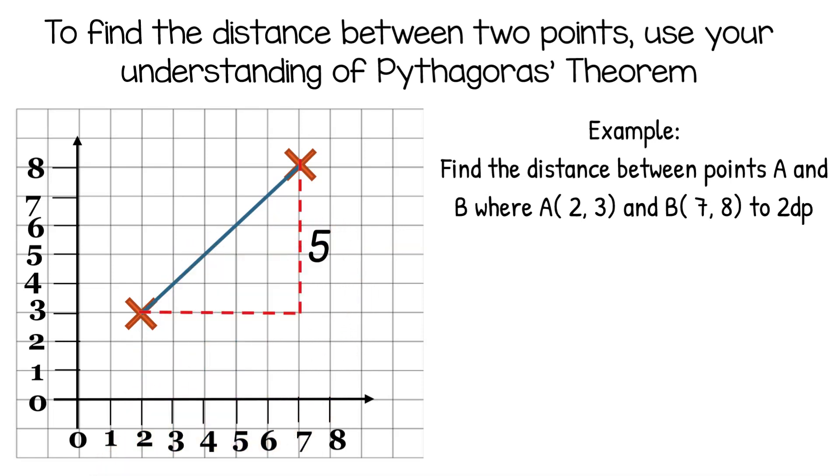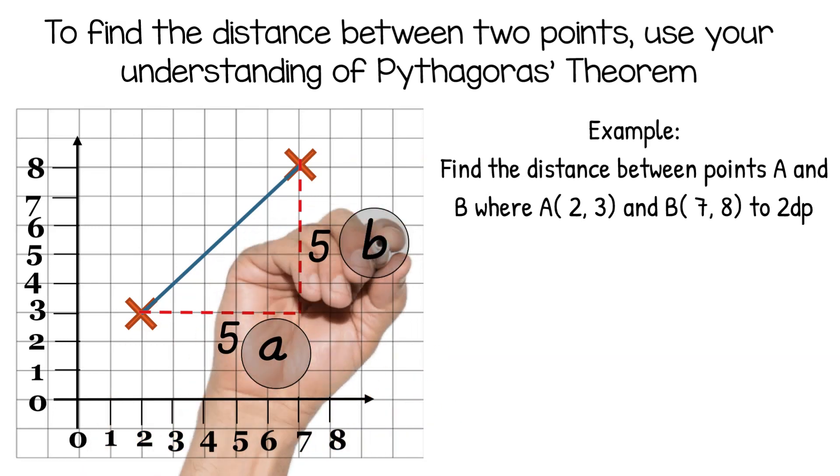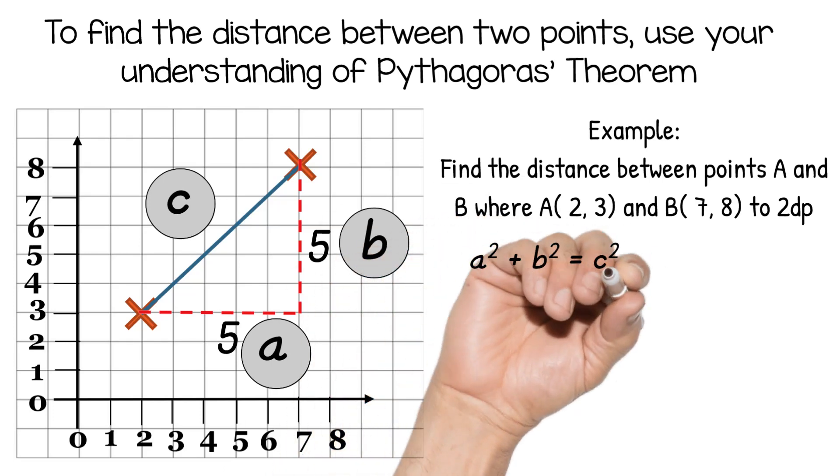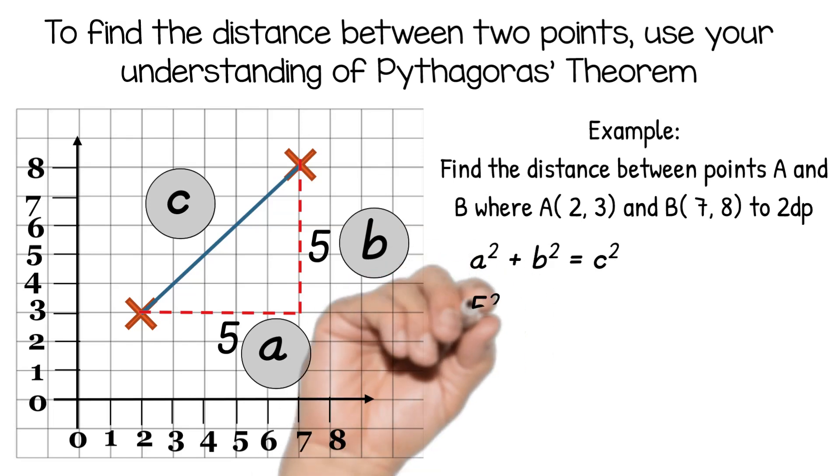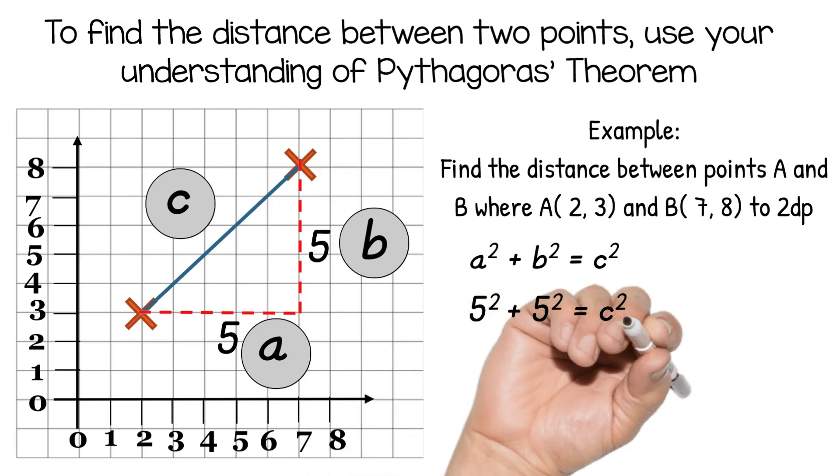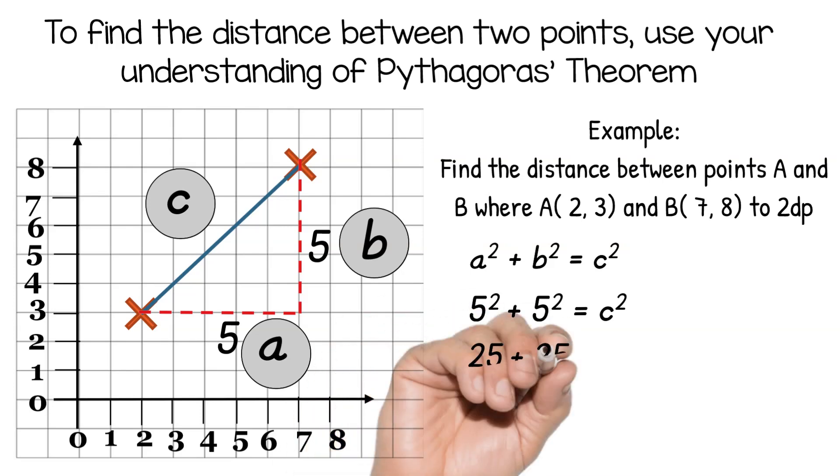So now write down the height and the base, and now you can label your right-angled triangle with A, B, and C. Now use the Pythagoras theorem, which is a² + b² = c². Sub in your A value and your B value, which is 5. 5² is 25, so 25 + 25 is 50, so c² = 50.